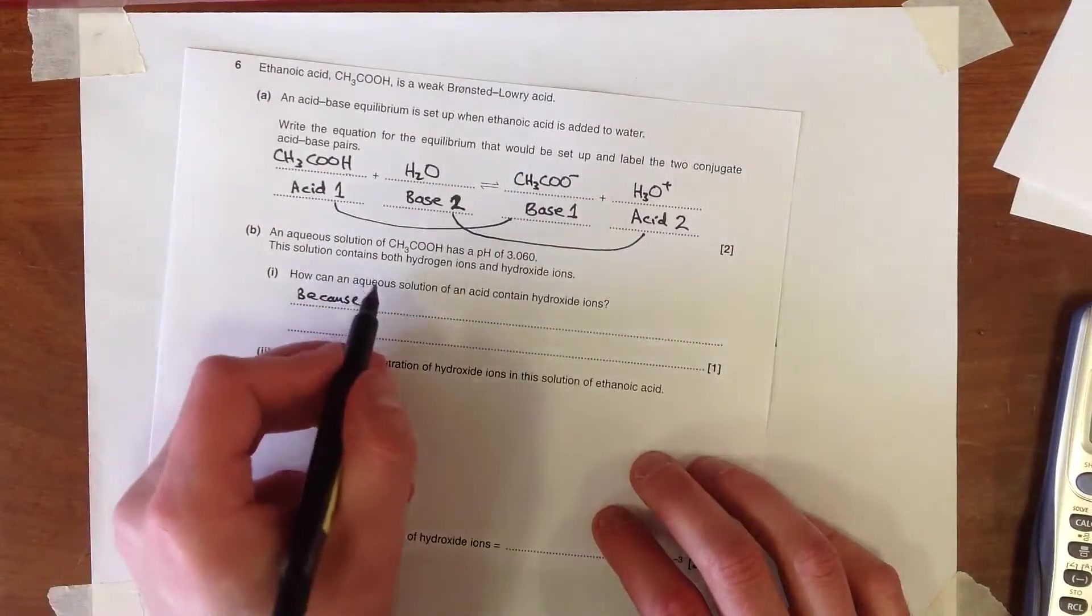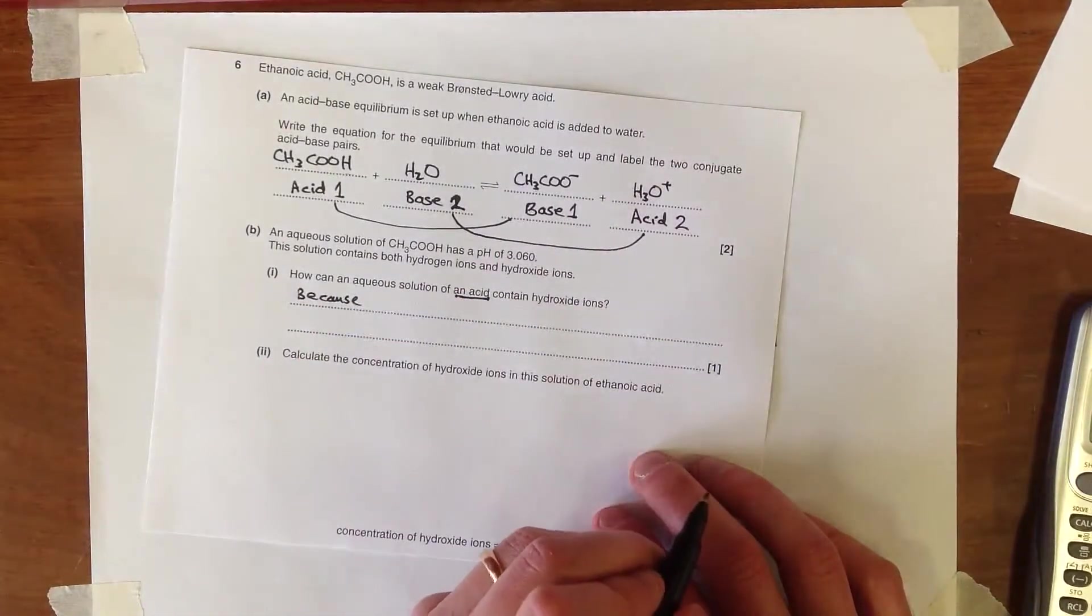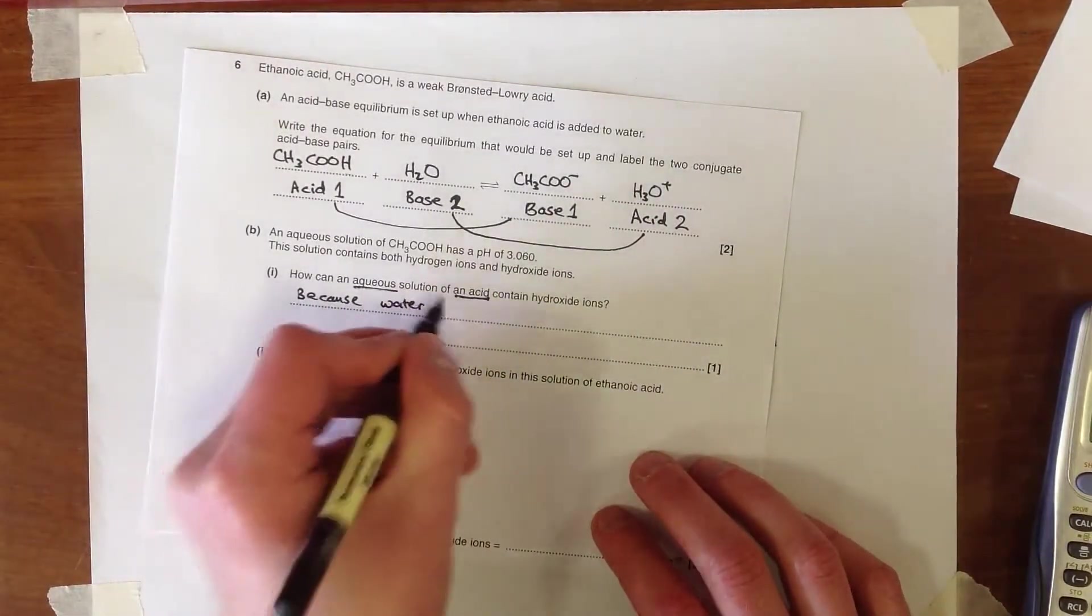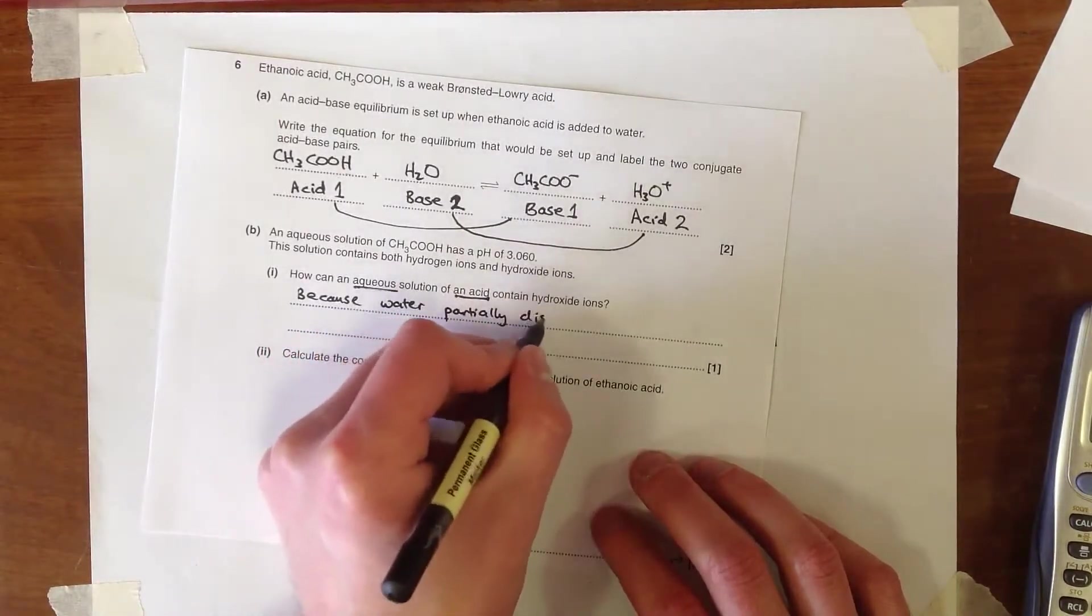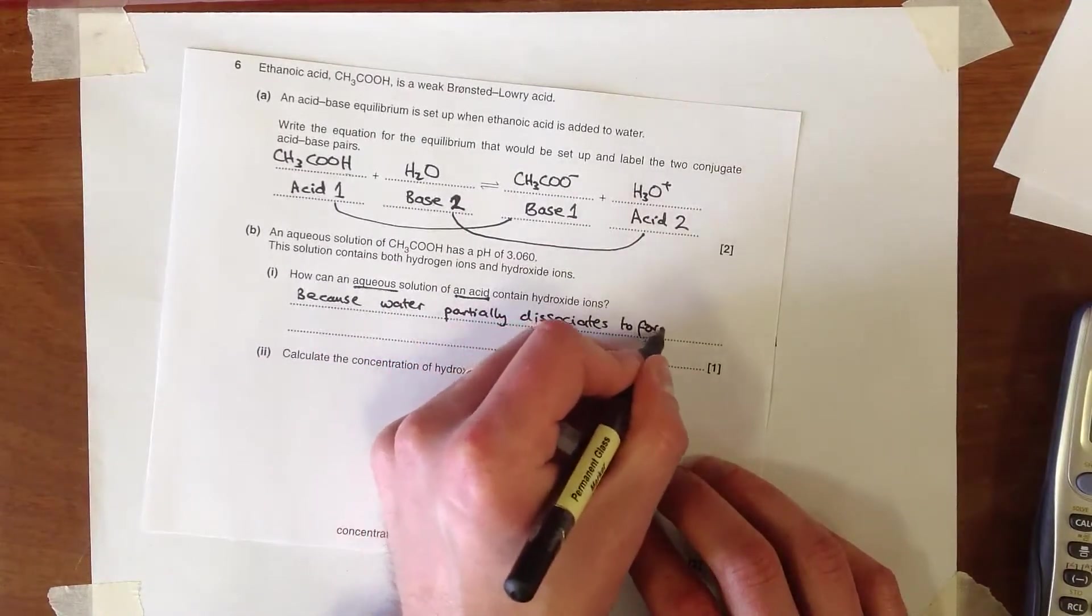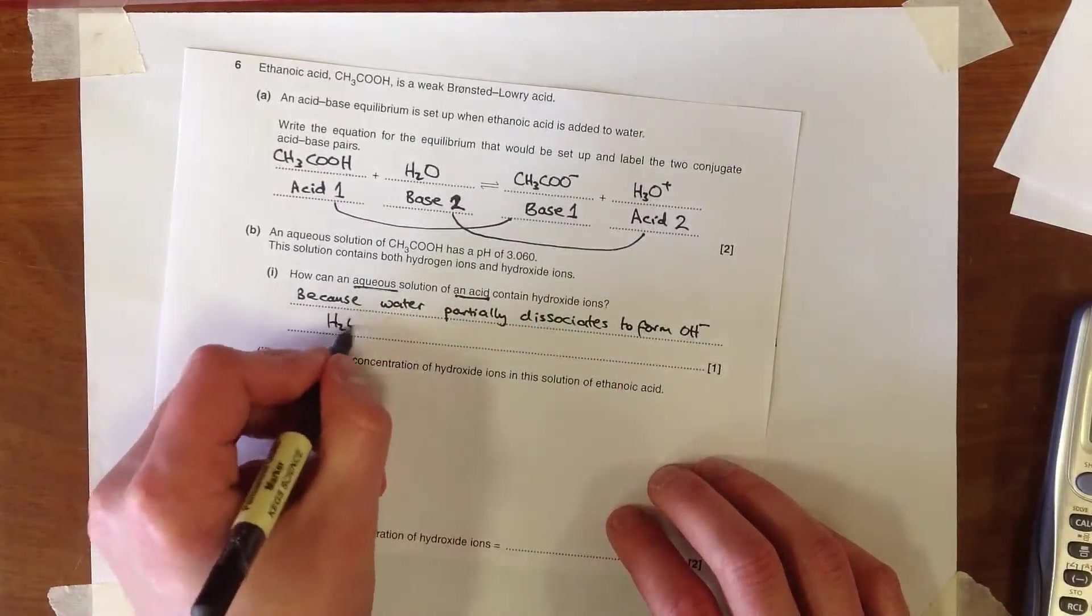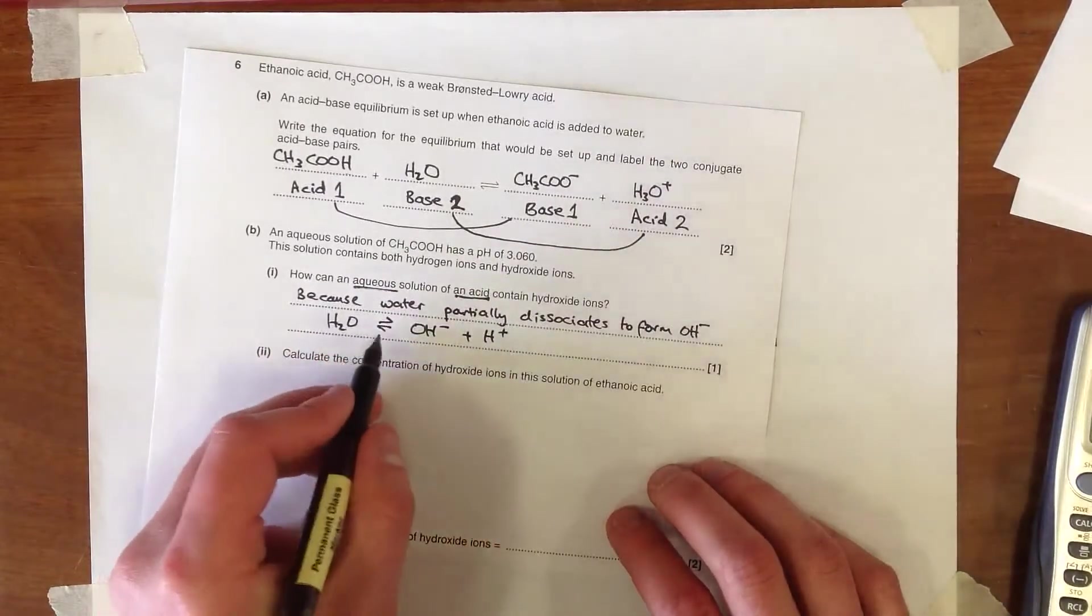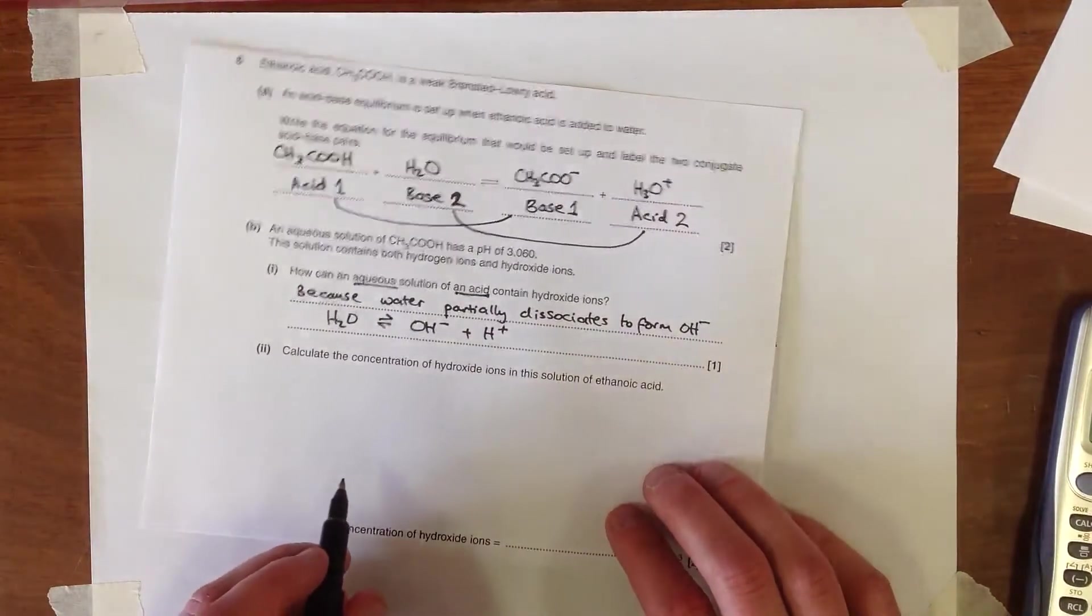So a good tip here, it says aqueous solution of an acid. So we've got an acid, we know that only produces H+, but aqueous solution. So always remember the water because water partially dissociates to form OH-. It's a good idea to put the equation in here just to show that you know what you're doing. But do make sure that you show that as a reversible reaction arrow because this is not something that occurs to a great extent.